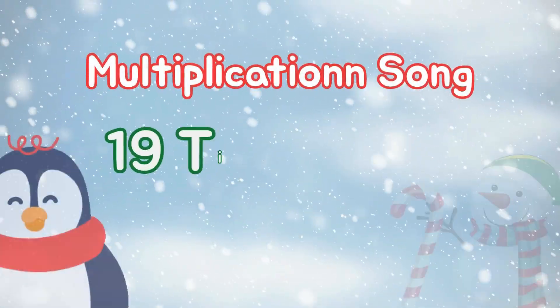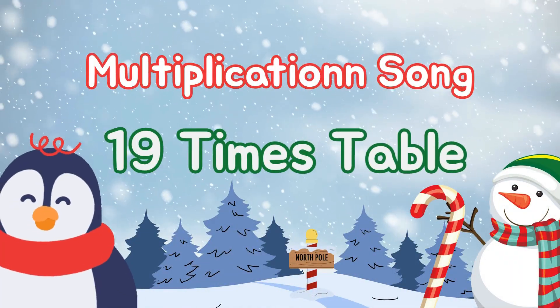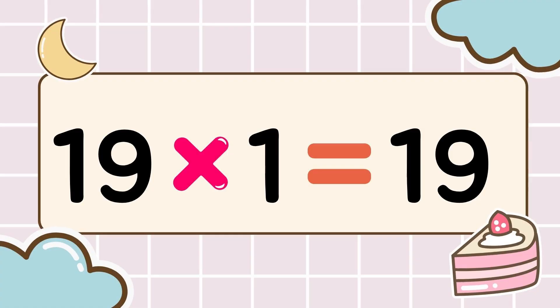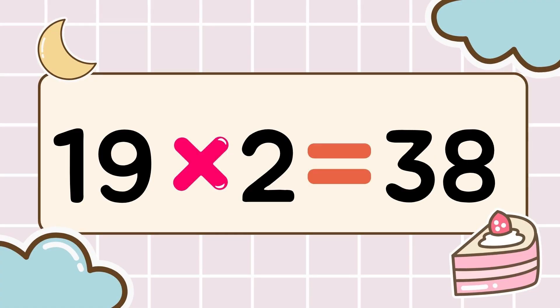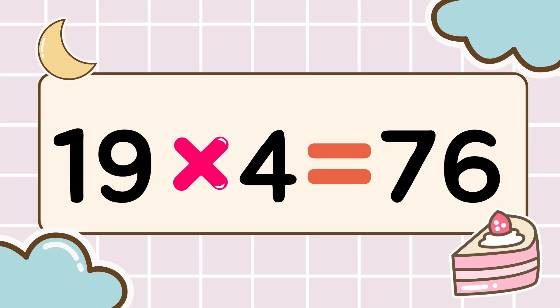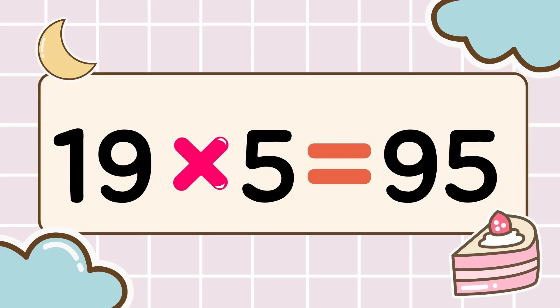Math time, let's multiply! Let's have fun while we memorize. 3, 2, 1, go! 19 times 1 is 19, 19 times 2 is 38, 19 times 3 is 57, 19 times 4 is 76, 19 times 5 is 95.